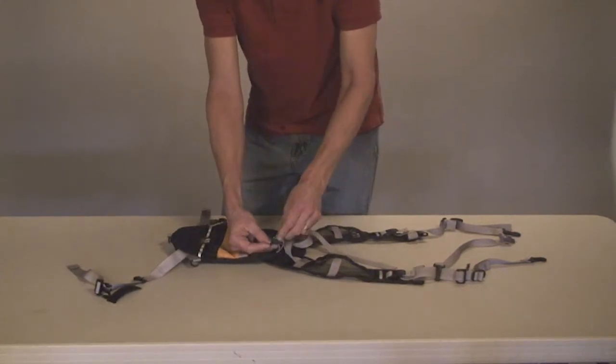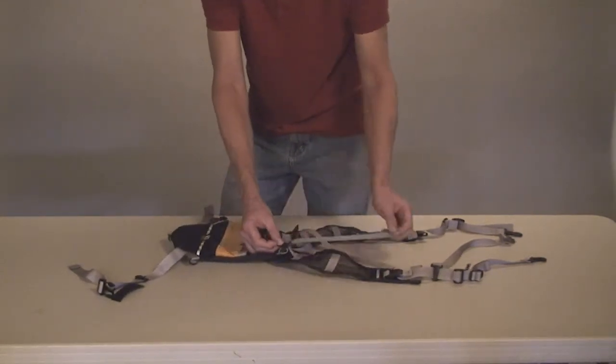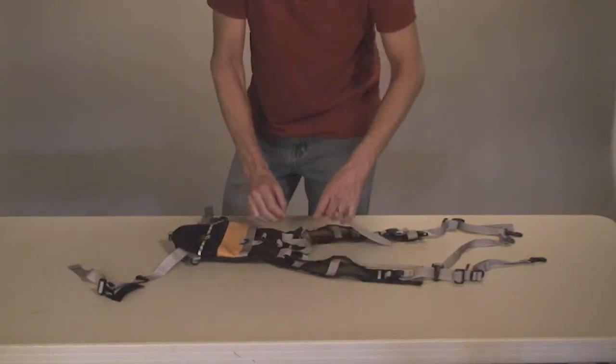You want to take the buckle, as we showed you before, and open it up, slip the webbing underneath, and then lock it in place.